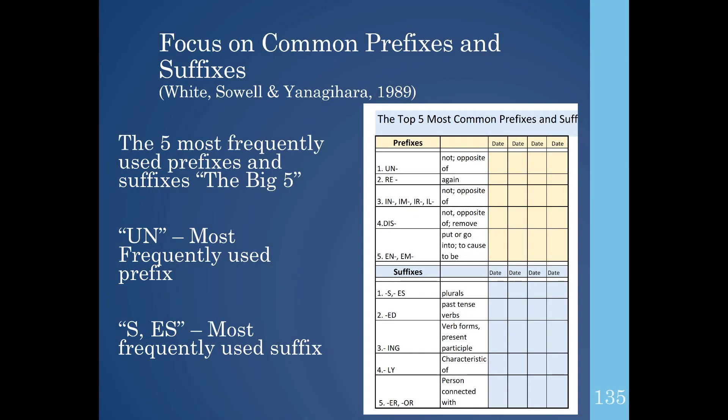These are the five most frequently used prefixes and suffixes. I refer to them as the big five. U-N is the most frequently used prefix, and -S-E-S is the most frequently used suffix. This sheet is organized with the first column listing the big five prefixes and suffixes, the next column showing the definition, and the remaining columns for data collection. I refer to this as my documentation-friendly format. Be sure to use it in a sheet protector so you can use dry erase markers — it saves time and paper.